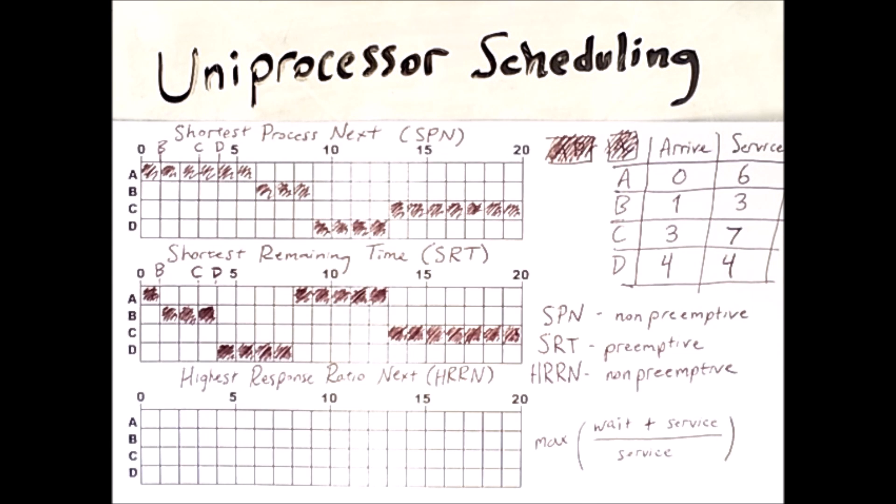HRN works using this formula to determine which process should run next. In other words, whichever process maximizes this quantity is the one that will be chosen to run to completion before the next process is chosen.